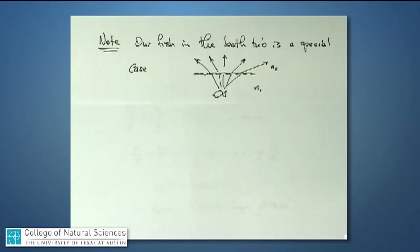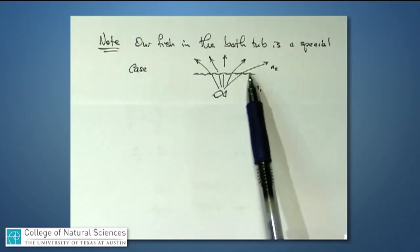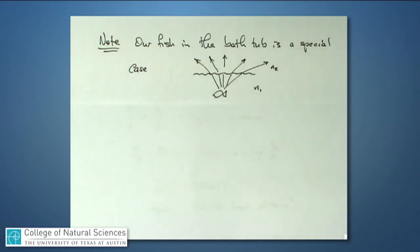But actually the fish in the bathtub is just a special case of a refracting surface. This water line right here, if it was assumed to be a perfectly smooth bathtub of water, is just an example or a special case of a spherical refracting surface where the radius of curvature is essentially infinite.